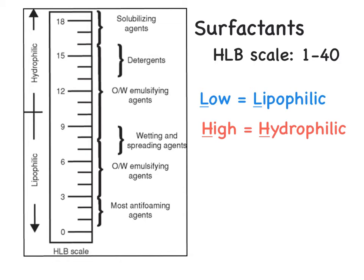Just as a quick review, the HLB scale is a measure of the hydrophilicity or lipophilicity of the different surfactants. The total scale ranges from 1 to 40, with the low numbers representing more lipophilic surfactants, and the high numbers reflecting more hydrophilic surfactants.